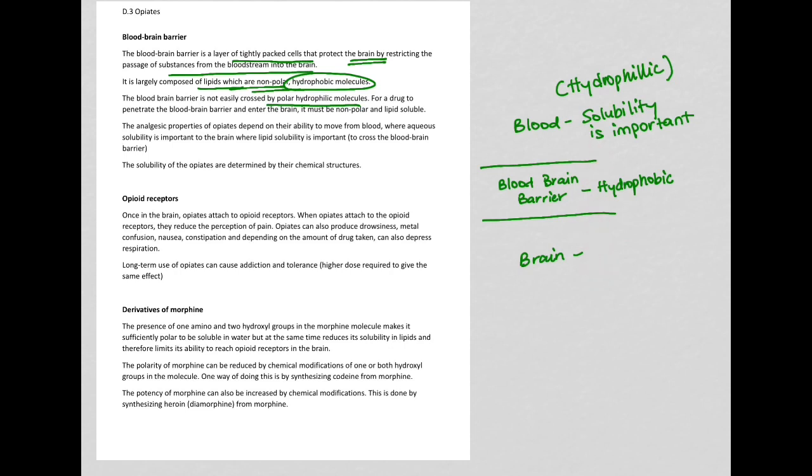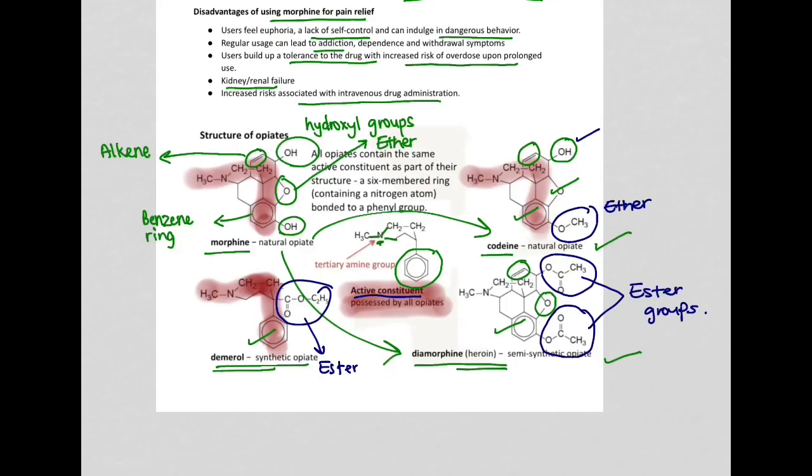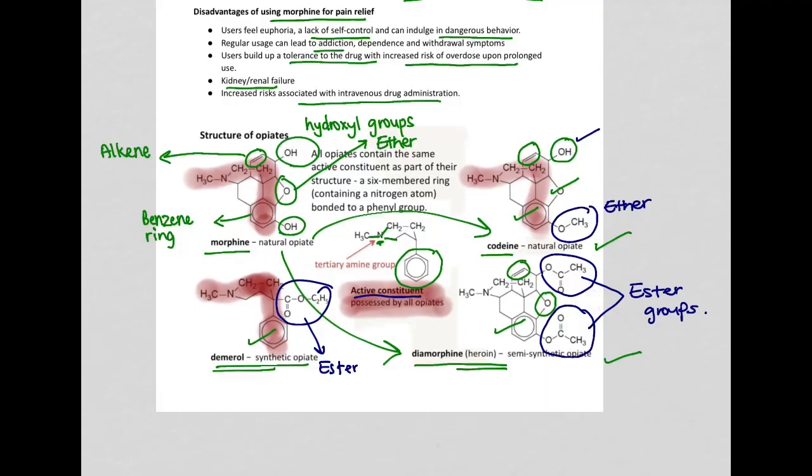The solubility of the opiates are determined by their chemical structures. So these structures will help us to know how soluble they are, how hydrophobic they are as well.